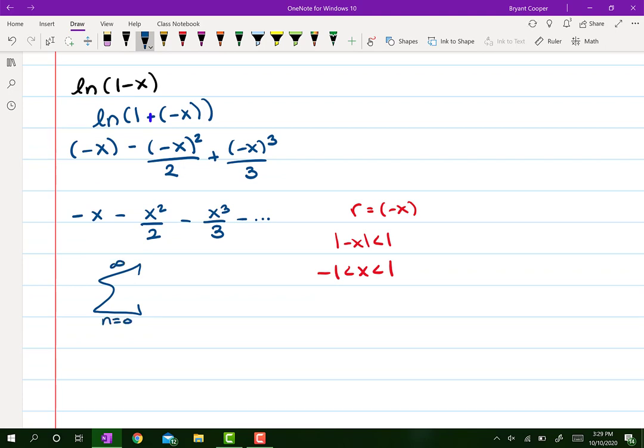Then I'm going to write out my series. And you basically just write the same series for ln except now instead of having just x to the n over n, it's now negative 1 because we need the negative. And also notice that the series starts at n equals 1.